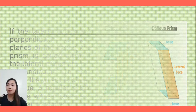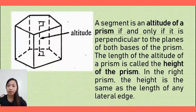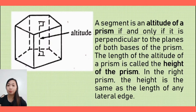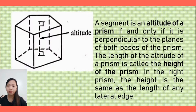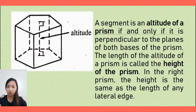A segment is an altitude of a prism if and only if it is perpendicular to the planes of both bases of the prism. The length of the altitude of a prism is called the height of the prism. In a right prism, the height is the same as the length of any lateral edge.